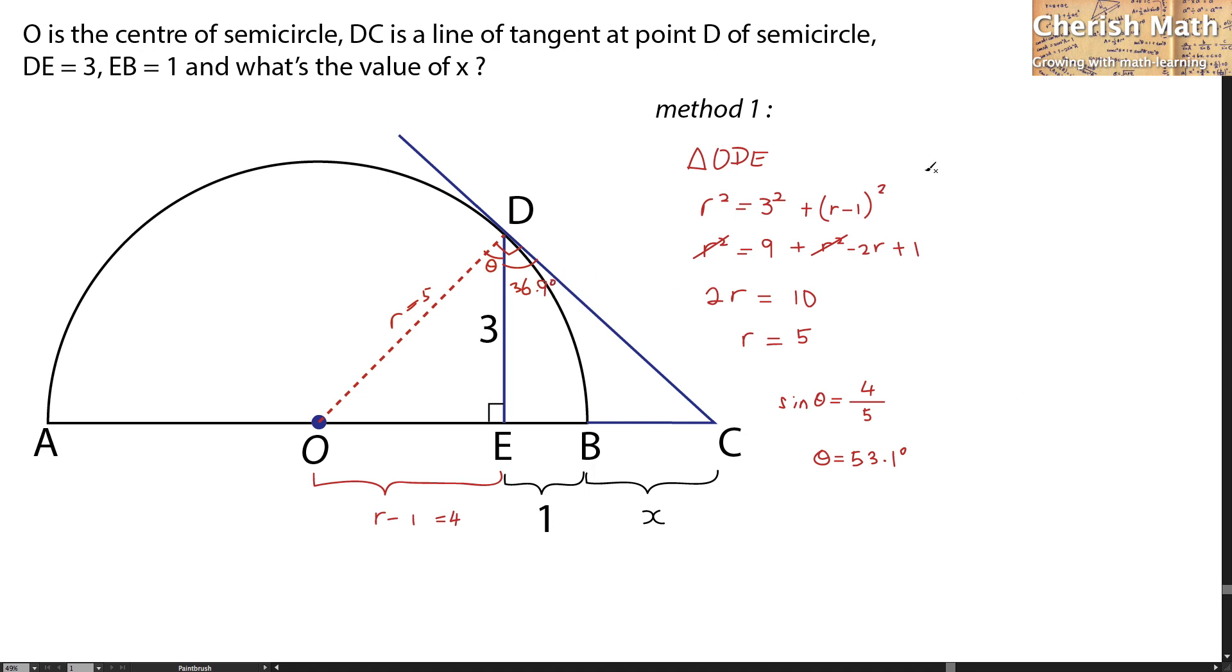By referring to the triangle DEC, I'm going to use tangent 36.9, and that is opposite with the length of EC, and that consists of 1 plus x divided by DE which is 3.